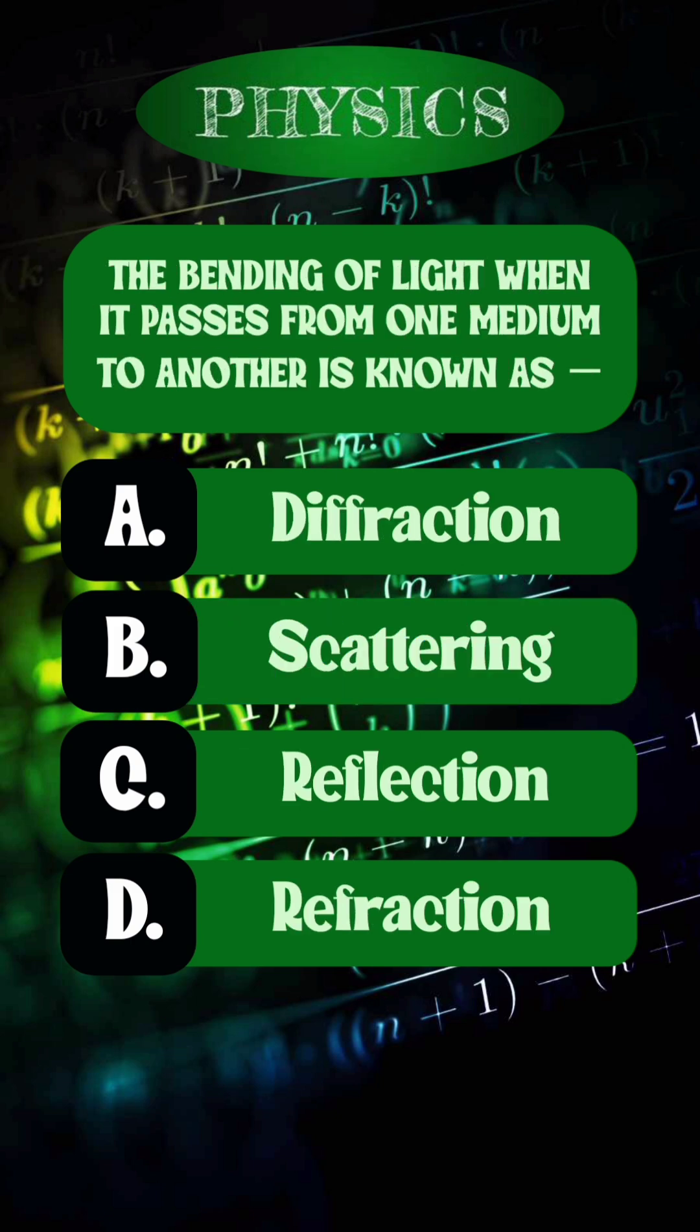Question 3. The bending of light when it passes from one medium to another is known as? Right answer is option D, refraction.